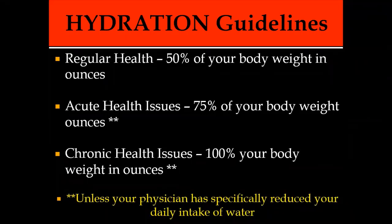So if I weigh 200 pounds, I want to drink 100 ounces of water. If I've been outside working out really hard, I want to drink 75% of my body weight or 150 ounces. If I have a serious health condition, cancer, diabetes, fibromyalgia, Crohn's, you want to drink 100% of your body weight in ounces.